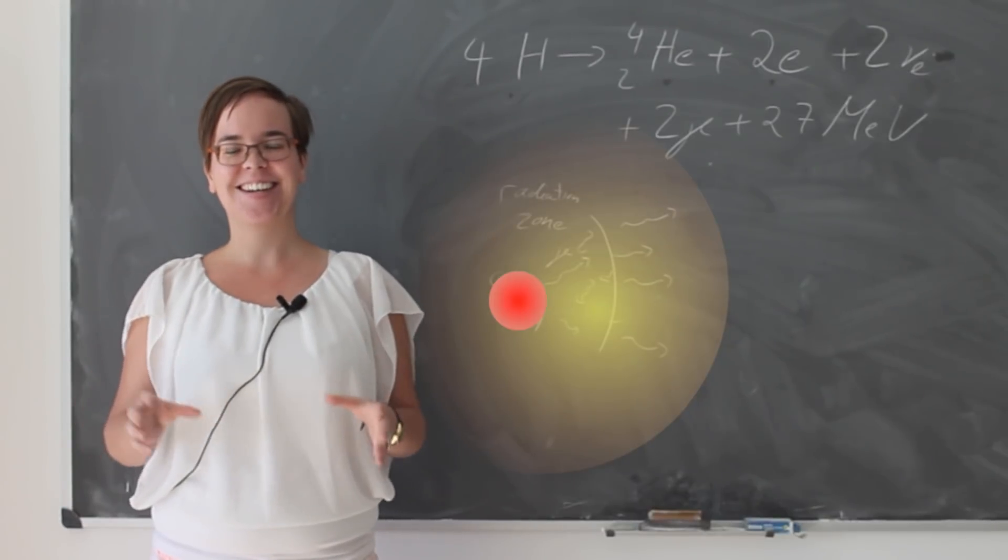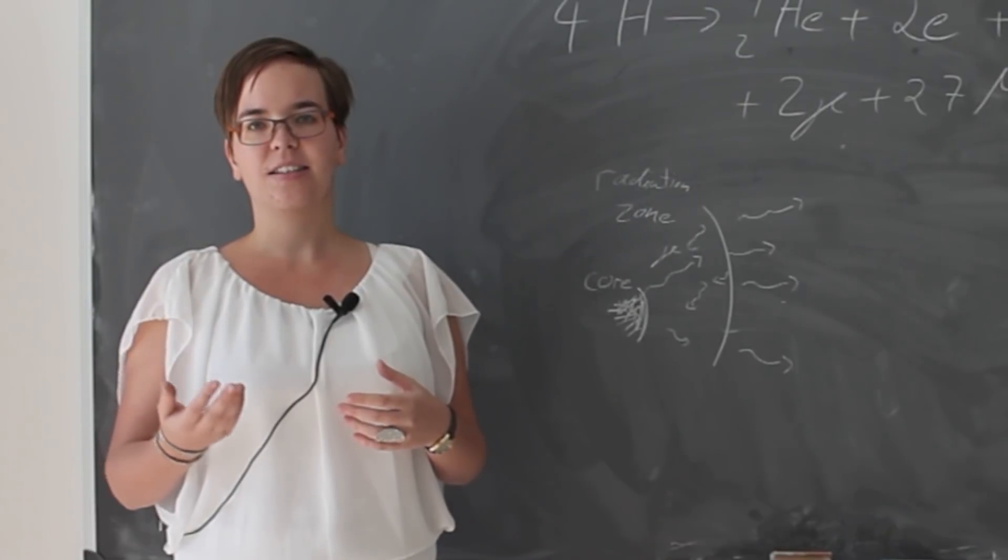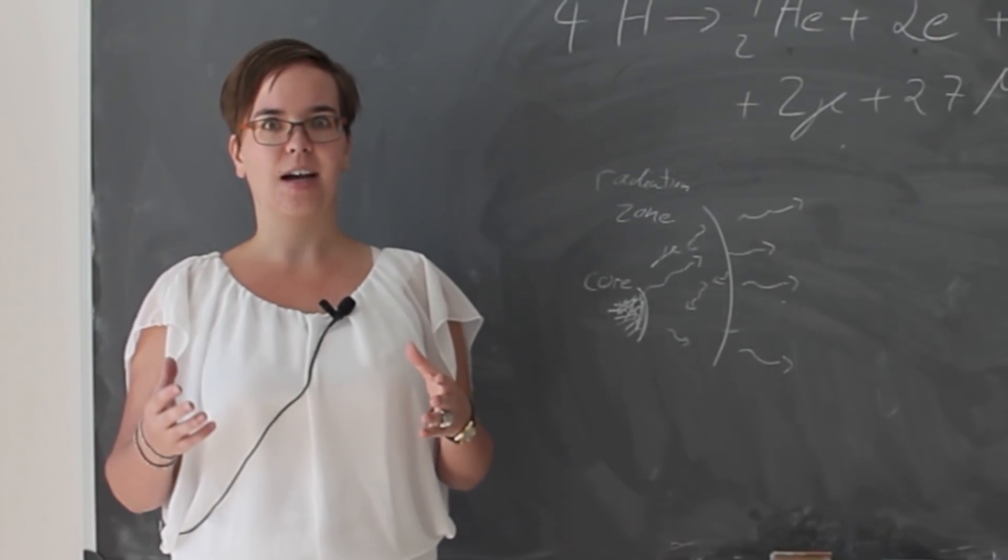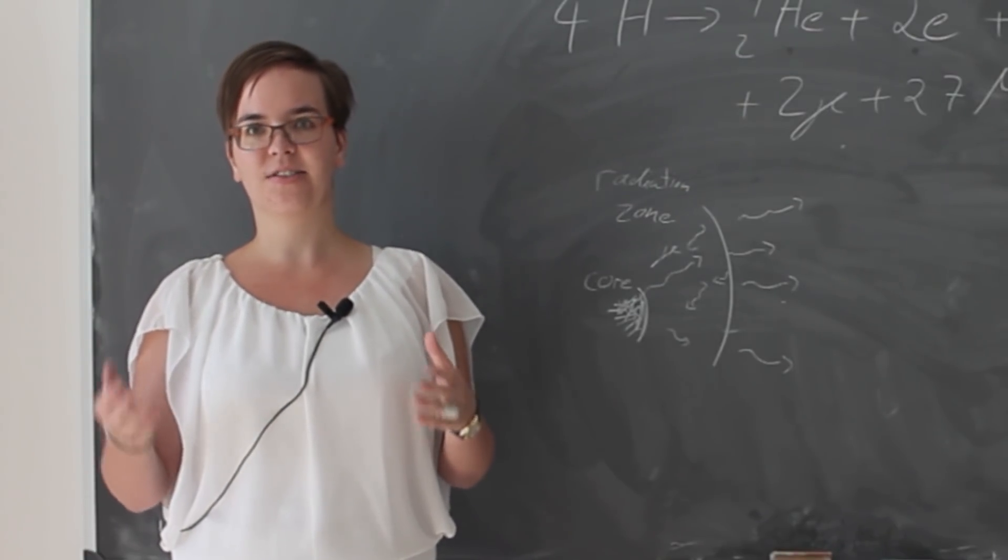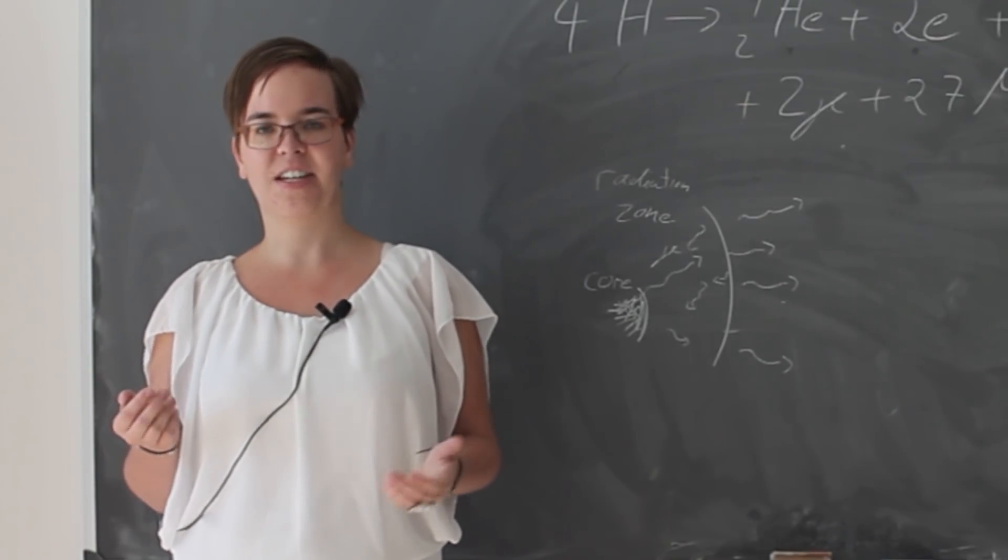In total, there's a net energy flux in form of photons from the center of the Sun to the surface, but the energy in form of photons takes a long time of the order of 1,000 years to get out of the Sun because the photons interact so often with the solar material.